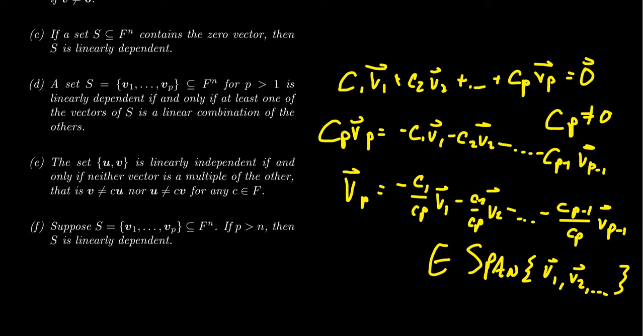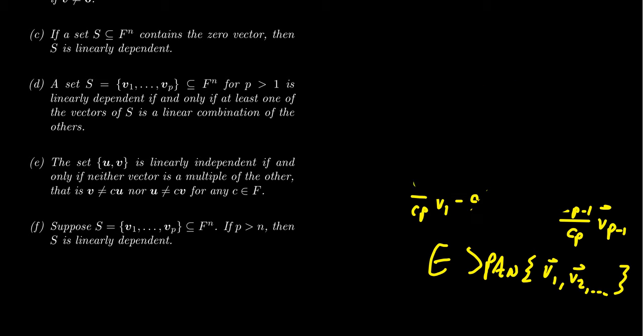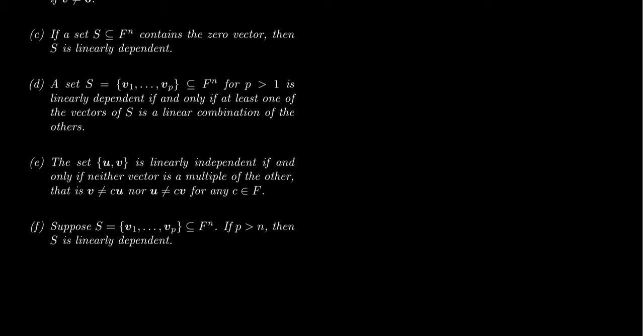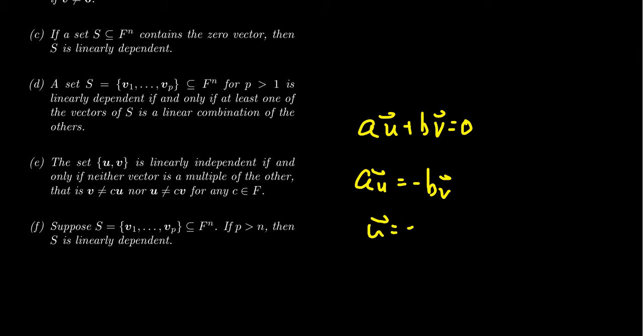If you apply that to the case of only two vectors: A·U + B·V = 0, then A·U = −B·V, and dividing by A (since A is non-zero) gives U = (−B/A)·V. When you have only two vectors, the set will be dependent only if they are multiples of each other—you can scale one to get to the other. Sets of one or two vectors are very easy to check for independence or dependence.